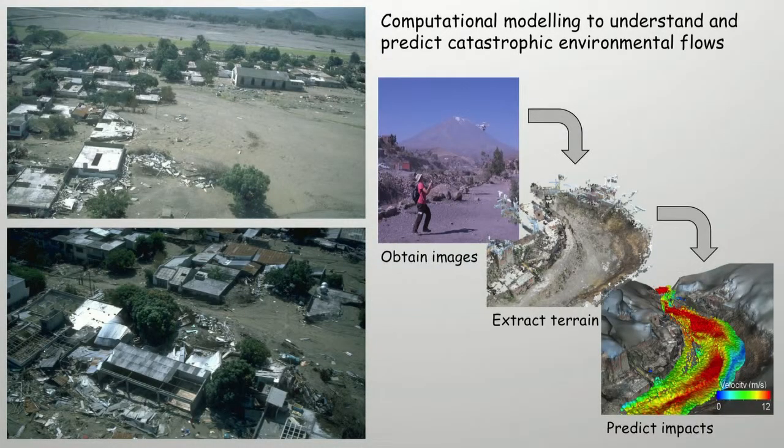However, the models we use require detailed information on the shape of the terrain that the lahars flow down. But in areas at risk of lahars, this terrain is constantly changing through erosion, previous lahars, or human interaction. And this makes current methods we use to measure the terrain, such as through satellite imagery, difficult and costly.